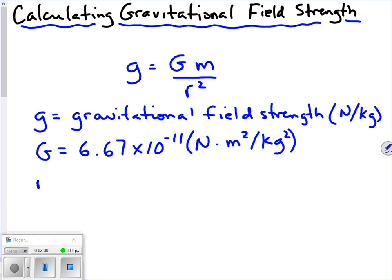M is the mass of the object that is creating the gravitational field. In most questions you'll encounter in Science 30, that would be the mass of the Earth, or maybe the mass of another planet like Mars or Venus. That value would have to be given — it's not something you typically have to find. In Science 30, it's almost always provided.